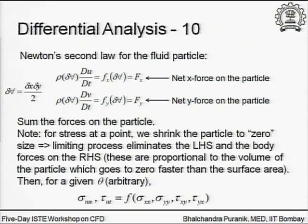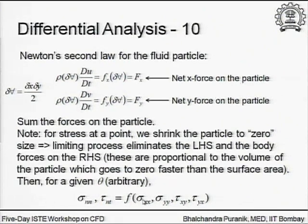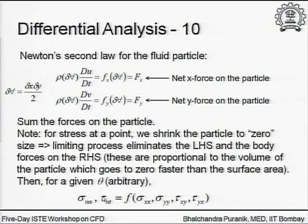What remains at the end of the limiting process is a couple of equations: one relating sigma_nn — the normal force on the slanted surface — in terms of sigma_xx, sigma_yy, tau_xy, and tau_yx; and another relating tau_nt — the shear stress on the slant surface — as a function of those same four stress components.